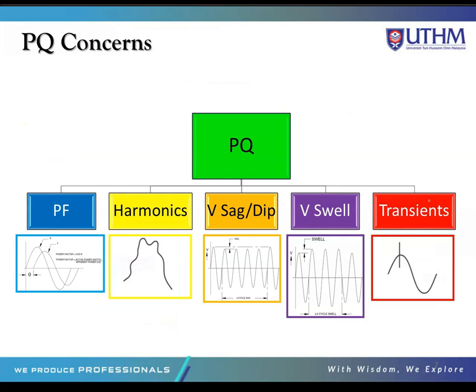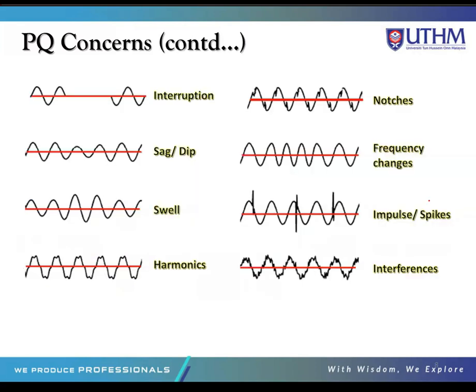The components involved in power quality concerns include: power factor, harmonics, voltage sag or dip, voltage swell, and transients. We will discuss each of these PQ concerns in detail in the next section. The waveform concerns related to power quality include: introduction waveform, sag or dip, swell, harmonics, notches, frequency changes, impulse or spark, and interference.